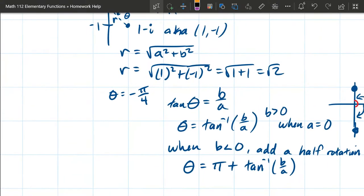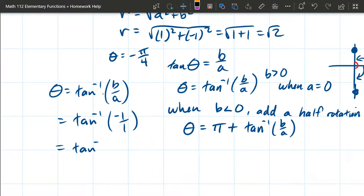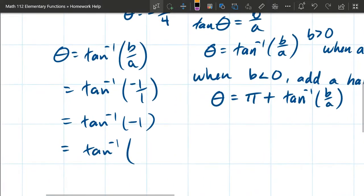Alright, so that's how you can get your angle if it's tricky. I'll go ahead and recompute the angle we had right here. We got tangent inverse b over a, which is tan inverse. b is negative 1 over 1. So this is tan inverse of negative 1. This can be a little bit tricky. So if you have a calculator, you can just type it in.